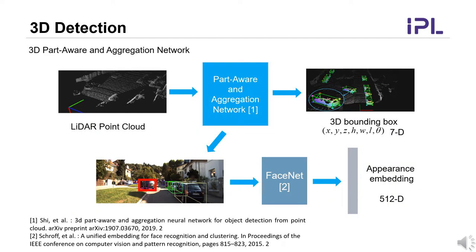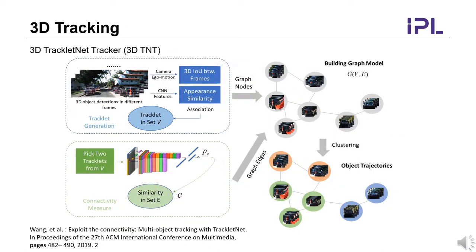Given the LiDAR point cloud, a 3D part-aware and aggregation network is adopted to get accurate 3D object locations. The projected box onto the 2D image is sent into a face net to get appearance embeddings. Then, a graph-based tracklet net tracker, which takes both CNN appearance and object spatial information, is applied to robustly associate corresponding detected objects along time.